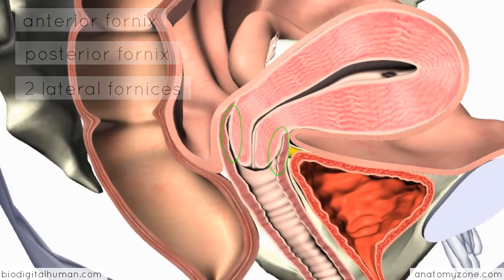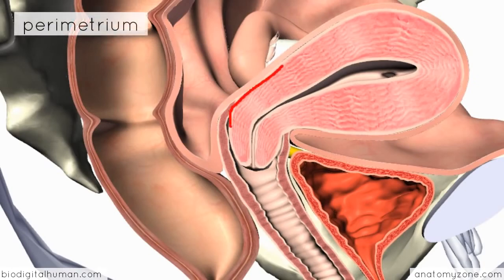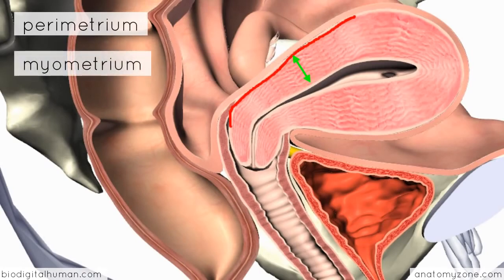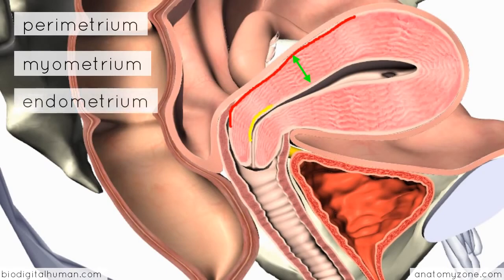In terms of the layers of the uterus, you've got an outer connective tissue layer called the perimetrium — I'm drawing this on in red. Then, as you can see from this cross-section, you've got a thick middle layer of smooth muscle called the myometrium, which is important during labor for contraction. And then lining the cavity of the uterus, you've got the endometrium, the internal mucosal layer. The endometrium is interesting because it thickens during the menstrual cycle and disintegrates at the onset of menstruation — it's under hormonal influence and varies in thickness throughout the cycle.